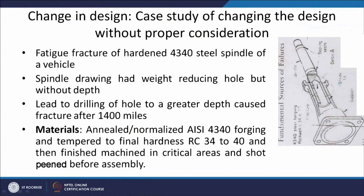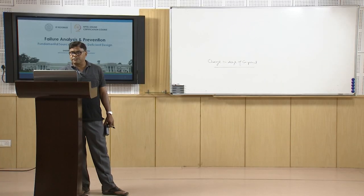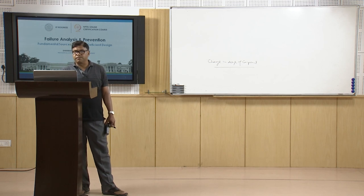The spindle was made of annealed, normalized AISI 4340 forging, forged and tempered to a final hardness of RC 34 to 40 on the Rockwell C scale, thereafter finish machined in critical areas and shot peened before assembly in order to relieve residual stresses — removing feed marks and inducing residual compressive stresses.